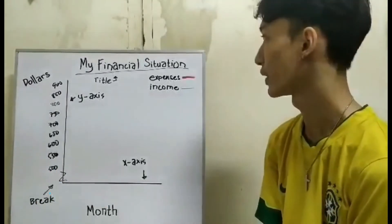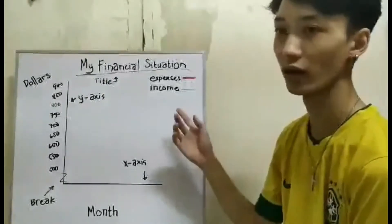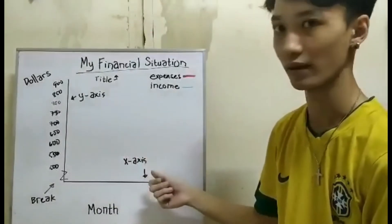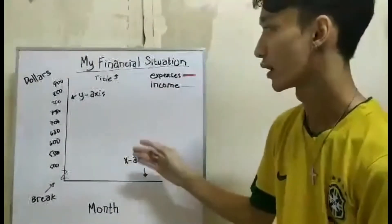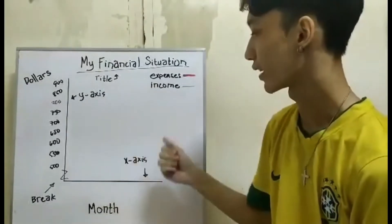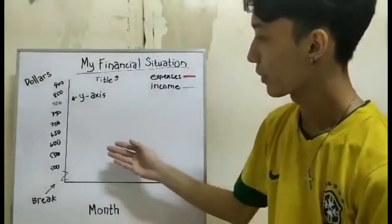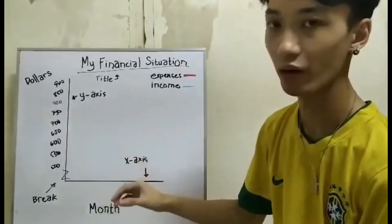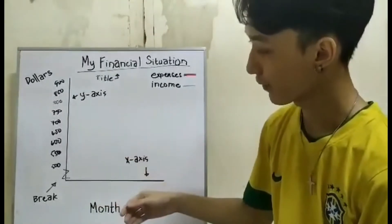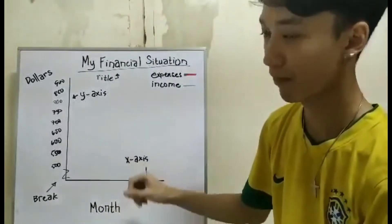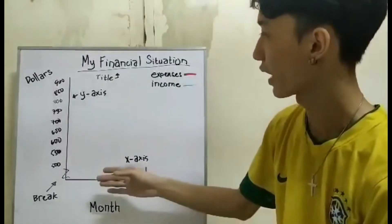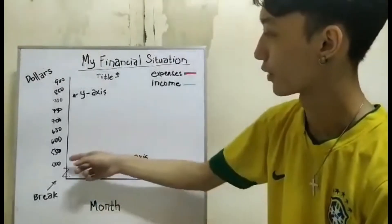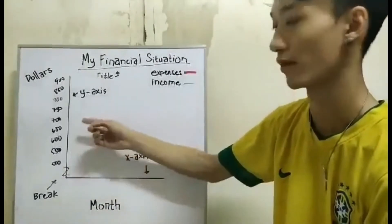In order to understand the basics in creating a graph, first we need a title to indicate what the graph shows. Then we need a y-axis and an x-axis. The y-axis contains the dependent variables. To signify that values are skipped from 0 to 500, the intervals are by 50s — 500, 550, 600, 650, and so on.